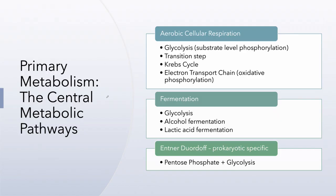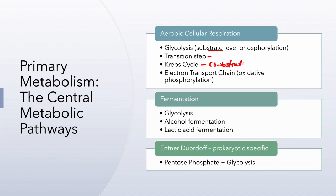Primary metabolism is also referred to as the central metabolic pathways. All organisms break down glucose and essentially use the same enzymes — for example, the same hexokinase used in human glycolysis is used by an E. coli cell. Within glycolysis we get some ATP during substrate level phosphorylation, then we move on to the transition step and on to the Krebs cycle, where we also have substrate level phosphorylation.